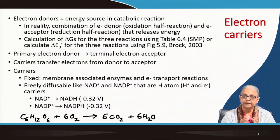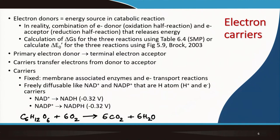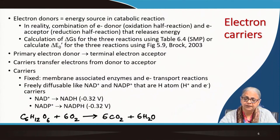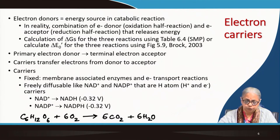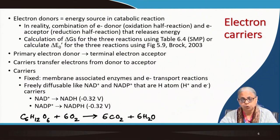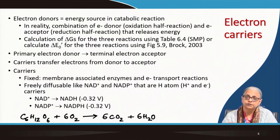Glucose is our primary electron donor. How many electrons has glucose donated in going to CO₂? We have 6 carbons in glucose going to 6 carbon dioxides, and carbon has gone from oxidation state 0 to +4. So 6 times 4 equals 24 electrons — glucose has donated 24 electrons.